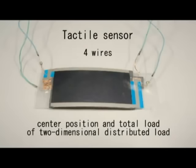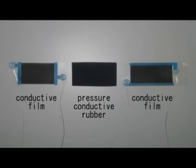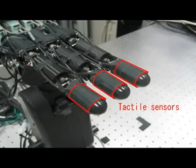This tactile sensor is a sheet-like object with only four wires. This sensor can measure the center position of a two-dimensional distributed load and the total load within one millisecond.